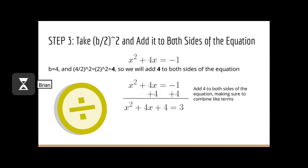Our next step is to take b divided by 2, square it, and add it to both sides of the equation. We have x squared plus 4x equals negative 1, and b equals 4. So we divide 4 by 2 to get 2, and 2 squared equals 4. We add 4 to both sides of the equation, combining like terms, leaving us with x squared plus 4x plus 4 equals 3.